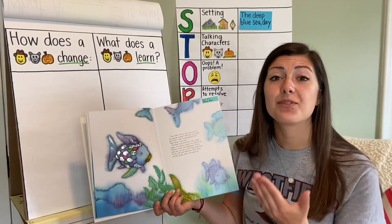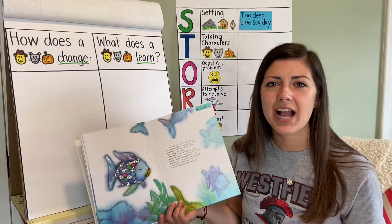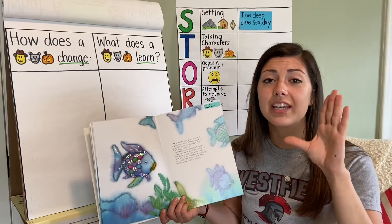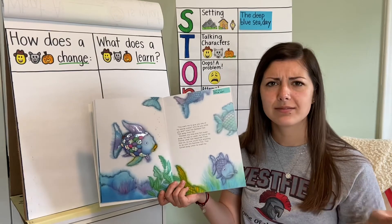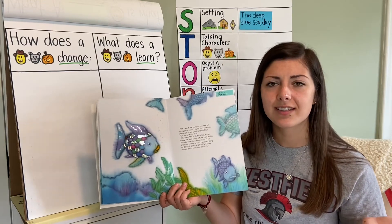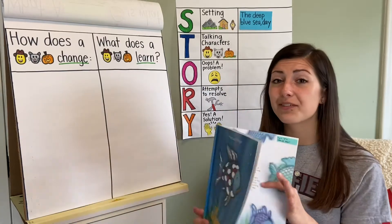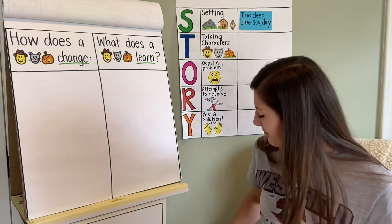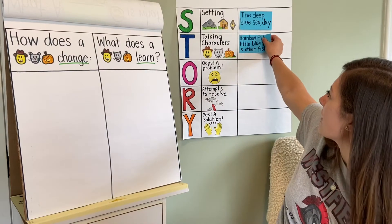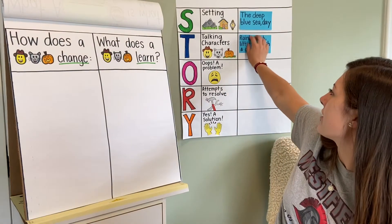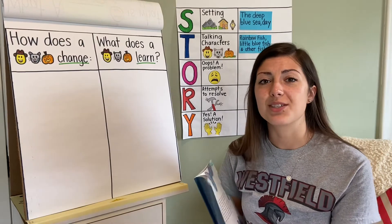Now I need some of your help. As I'm filling out my story chart, I know T stands for talking characters. So far in my story, who are the talking characters? We have the Rainbow Fish, we have the Little Blue Fish, and we have the other fish that are in the deep blue sea too.